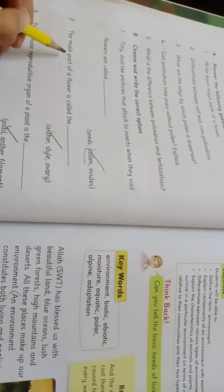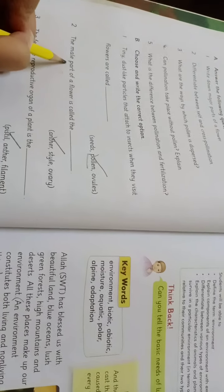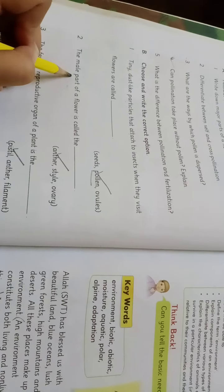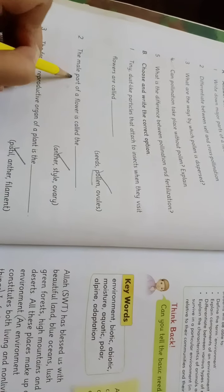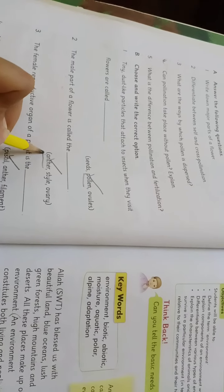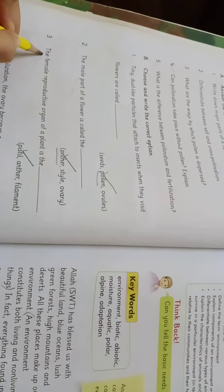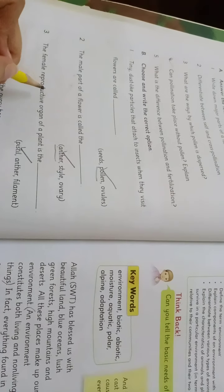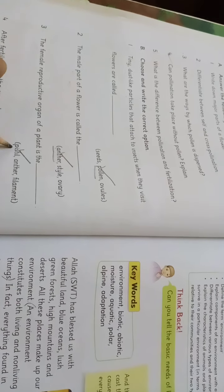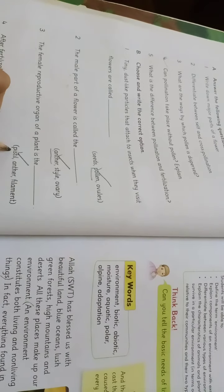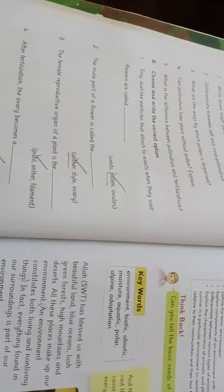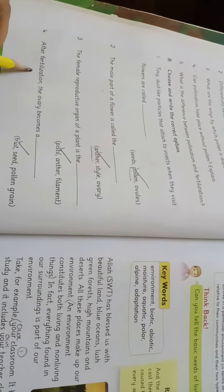Number two is the male part of a flower is called dash. Humne abhi padha tha ki male part of a flower ko hum stamen kahte hain. So the answer is stamen.